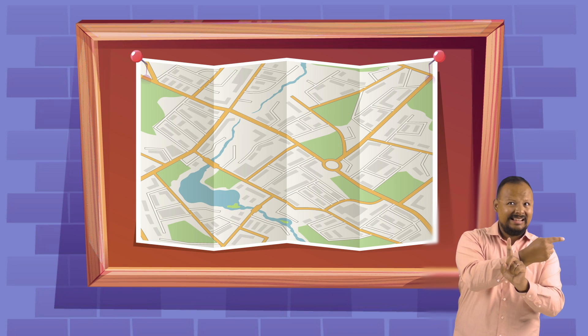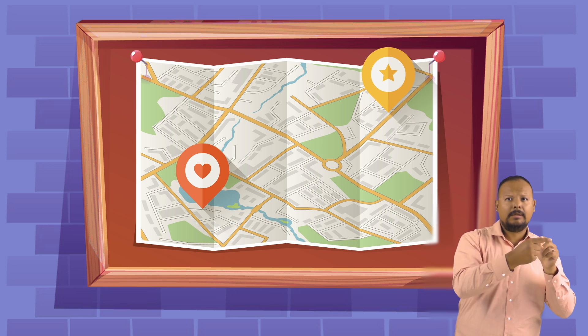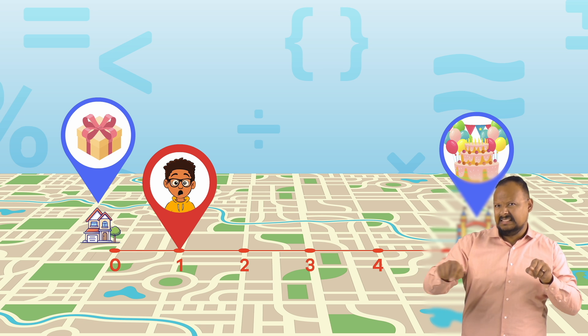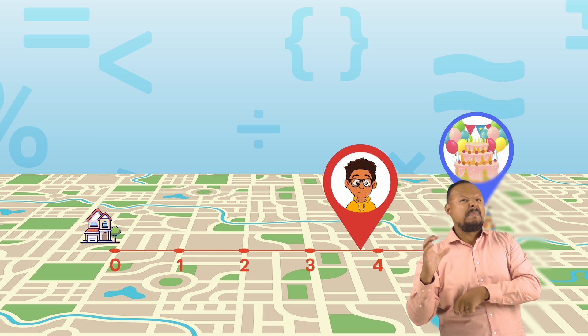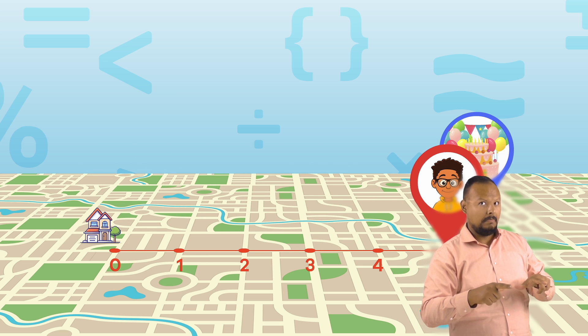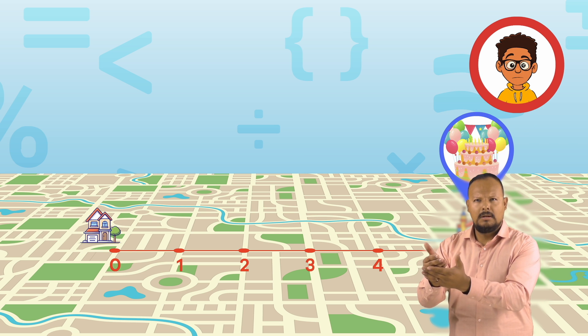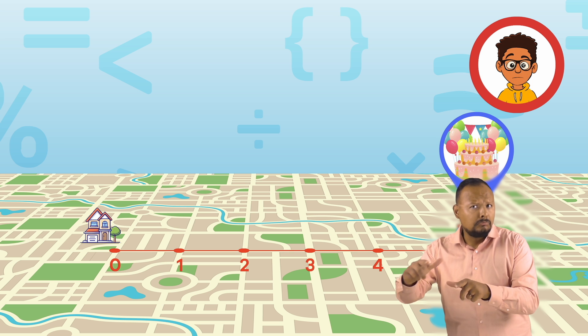Let's do an example looking at distance to help us see how absolute value works. Pretend that you are walking to your friend's house to go to a birthday party, and that their house is 5 blocks away from yours. After you have walked 1 block, you realize you left your friend's birthday gift at home. So you walk back 1 block to your house to grab it, and then walk the remaining 5 blocks to get to your friend's house. Even though the distance between your house and your friend's house is 5 blocks, you definitely walked a longer distance than that to get there.